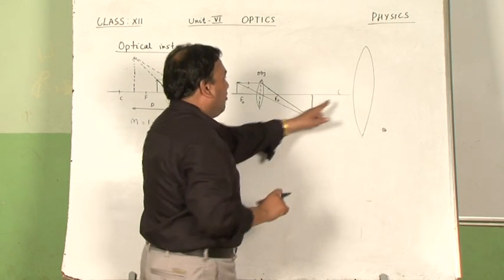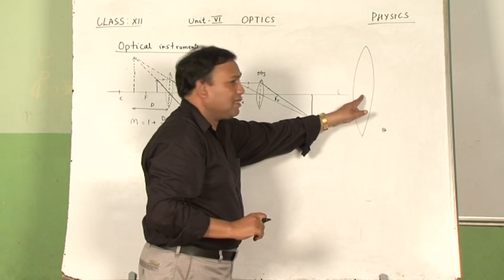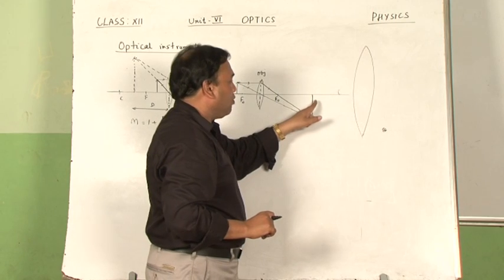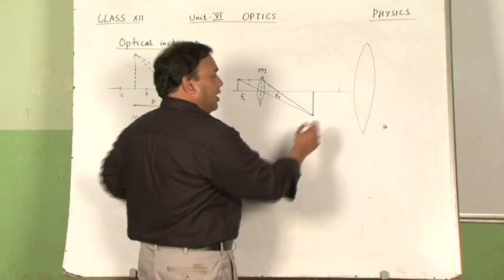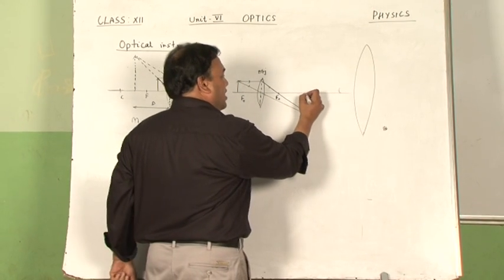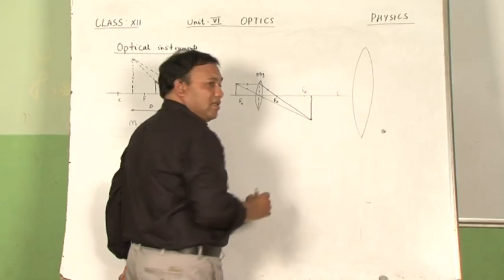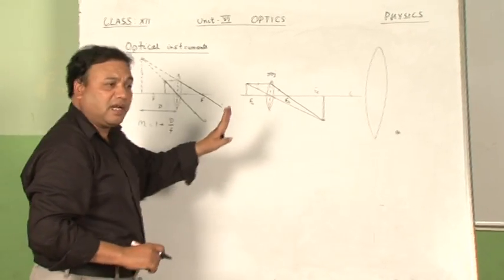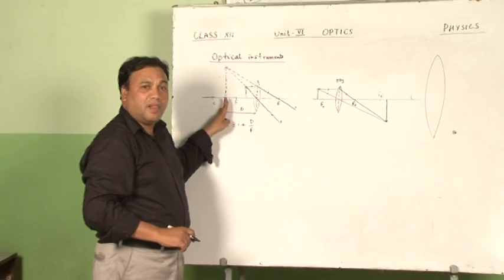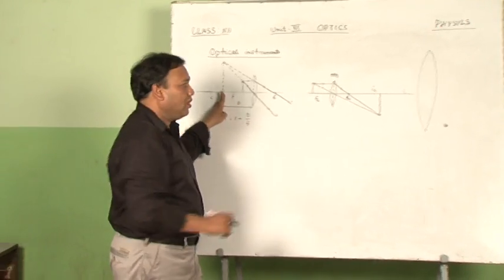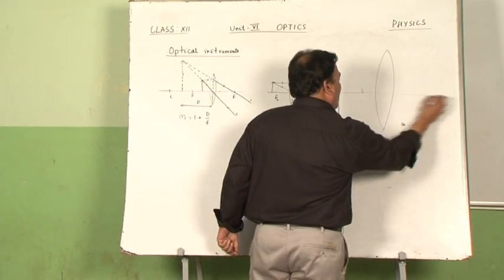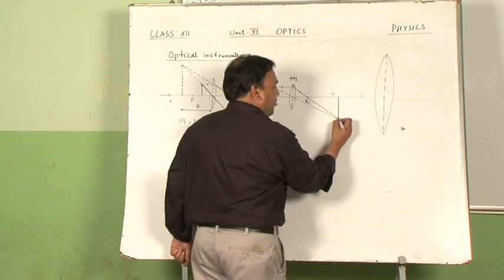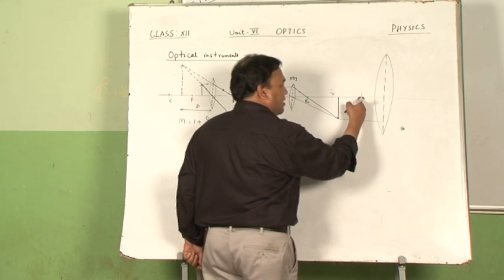When the lens is so adjusted that the position of the first image is falling within its focus, then this eye lens exactly works as a simple microscope. As a result of that, the final image formation will be shown here with one ray of light parallel to the principal axis.